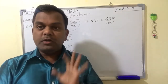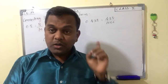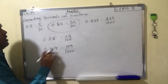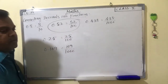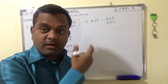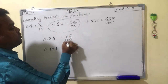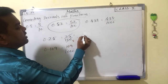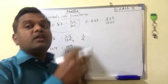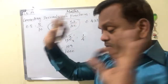One more concept: if it is possible, you have to simplify the fraction. For example, 25 by 100 — we can simplify with the table of 25. 1 times 25 is 25, 4 times 25 is 100. So the answer is 1 by 4.